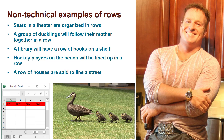Examples of rows: seats in a theater are organized in rows. Ducklings are said to follow their mother in a row. A library will have a row of books. Hockey players on the bench are said to be lined up in a row. And even a bunch of houses facing the street are said to be in a row — a row of houses lines the street.